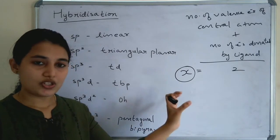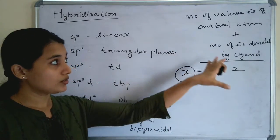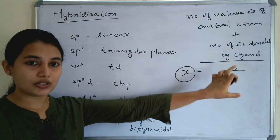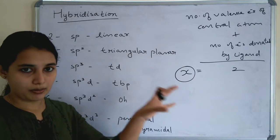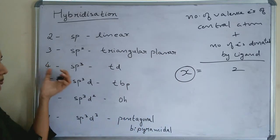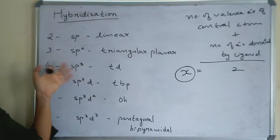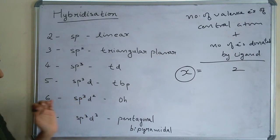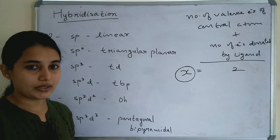So the equation is: number of valence electrons of the central atom plus number of electrons donated by ligand, divided by 2, gives a number. If the number is 2 then it is sp; 3 is sp2; 4 is sp3; 5 is sp3d; 6 is sp3d2; and 7 is sp3d3. This gives the hybridization of that molecule.